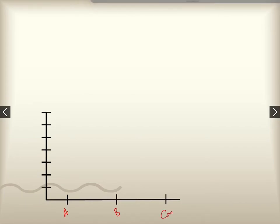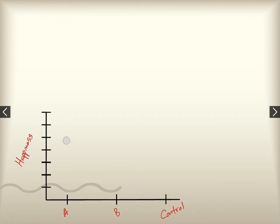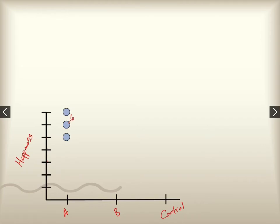We have drug A, drug B, and a control — three different types of interventions. Happiness levels are up the side, and what we want to know is how happy are the people who have taken each one of these drugs. In group A we have a person who scores a six on happiness, another who scored a seven, and another who scored a five. So in group A we have a five, a six, and a seven on happiness.